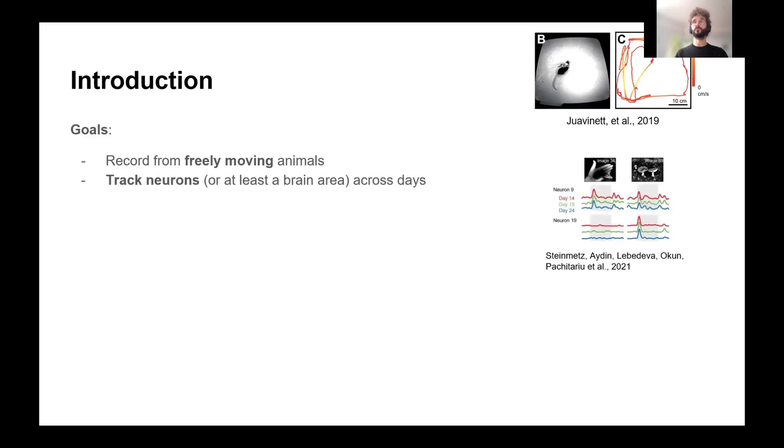Another reason is maybe to record across long periods of time, across days and months. This is an image that Matteo showed already. And this is two neurons, one here, one there, that have been recorded in the visual cortex across, in that case, up to 10 days, but actually it's across almost a year. And you can see that they retain their preference for certain images. So you can track the evolution or the stability of activity in the brain across days.